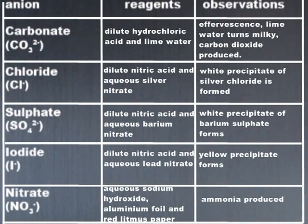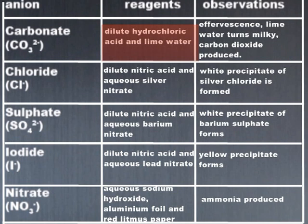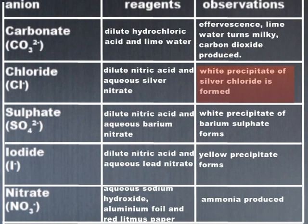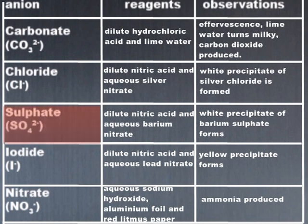Here is a complete summary of all the tests for the different N-ions. The test for the carbonate N-ion: effervescence and carbon dioxide were produced when dilute hydrochloric acid was added to the solution. The test for the chloride N-ion: a white precipitate was produced when dilute nitric acid and aqueous silver nitrate were added to the solution. The test for the sulfate N-ion: a white precipitate was produced when dilute nitric acid and aqueous barium nitrate were added to the solution.